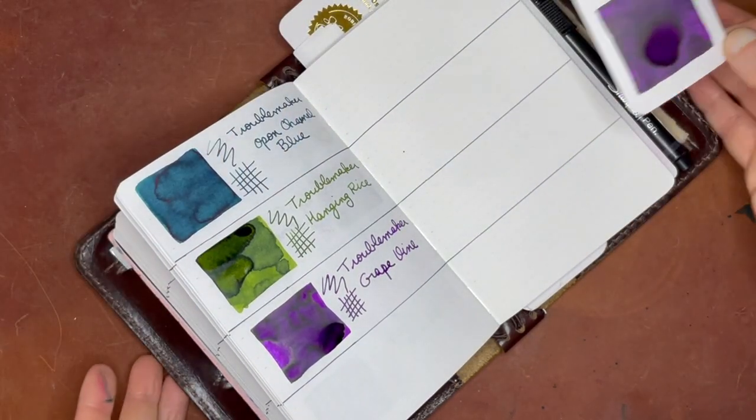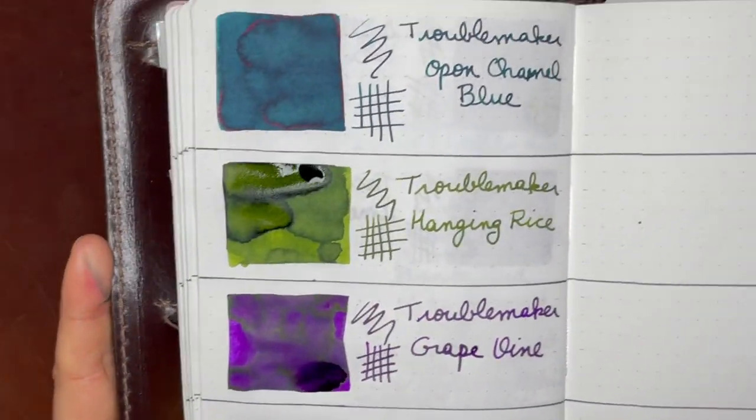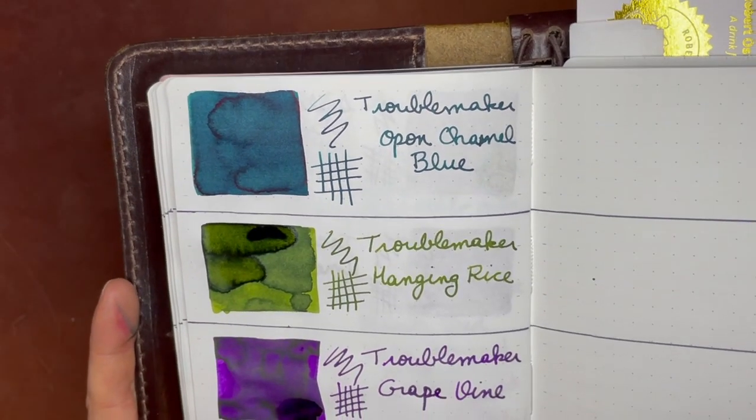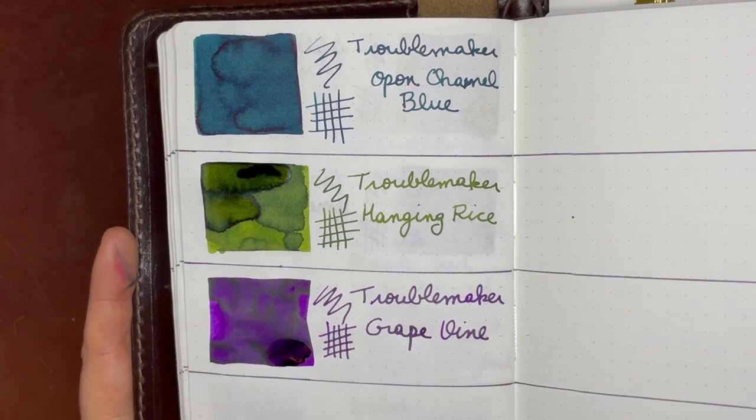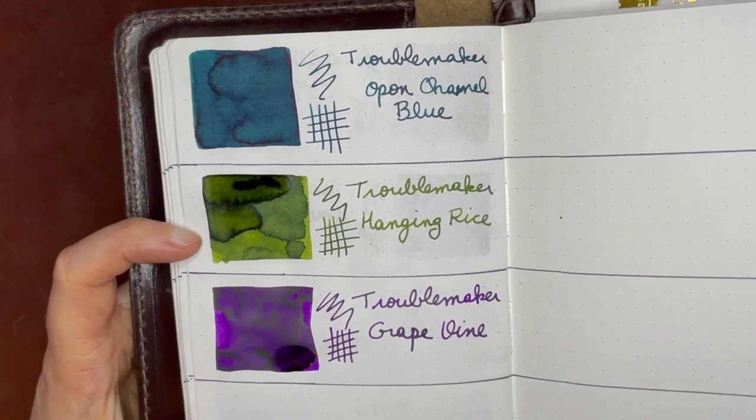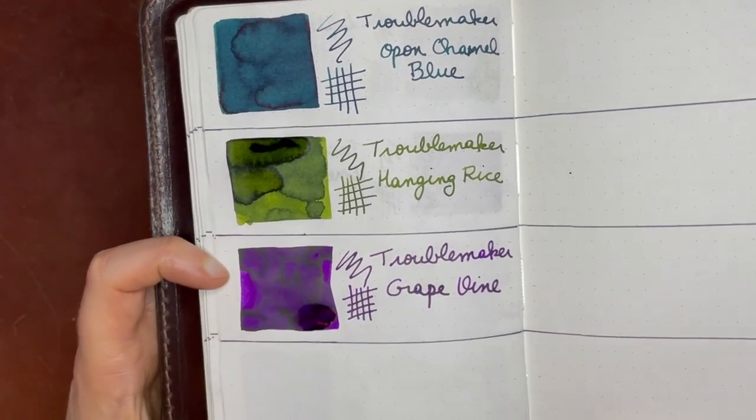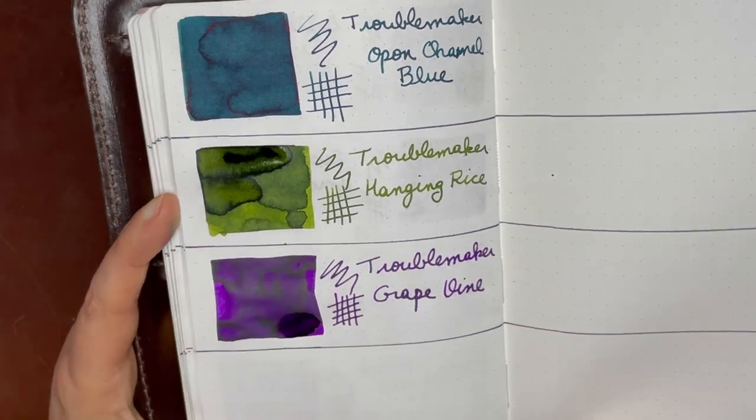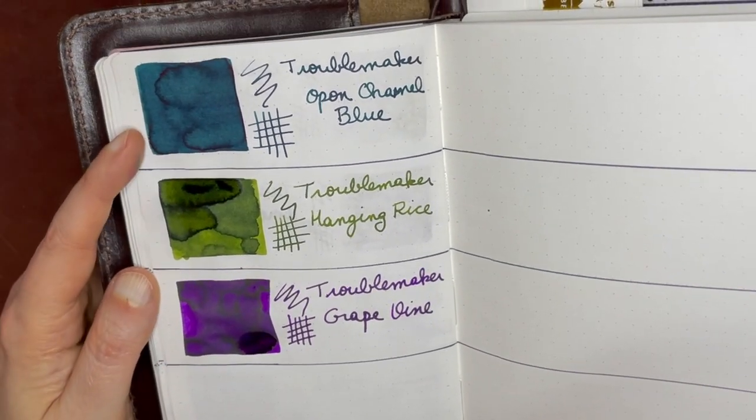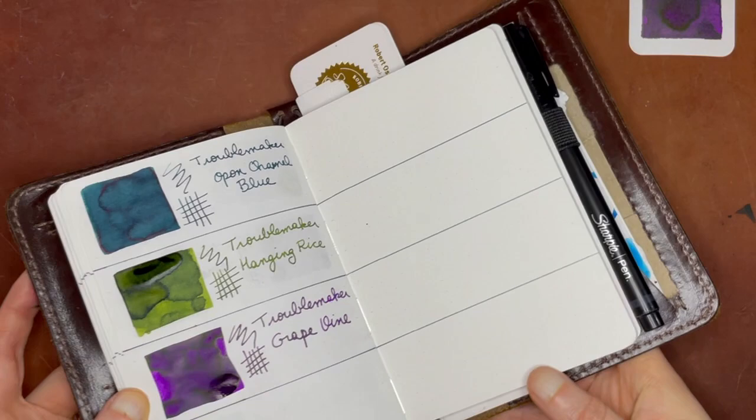Which we're almost approaching the end, but I'm going to show you this Troublemaker Opon Channel Blue. Really beautiful dark teal. Troublemaker Hanging Rice, which is this really beautiful green color, almost like a mossy color. Really nice. And some really nice shading in that little square swatch there. They all have pretty good shading. And they all, well, I don't think the Hanging Rice has any sheen. If it does, it's very subtle. But both the Grapevine and the Opon Channel Blue do. And there's that Grapevine there on the bottom. So these are great saturated colors.